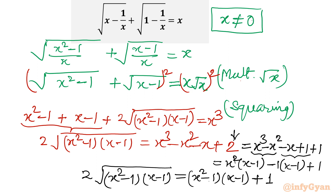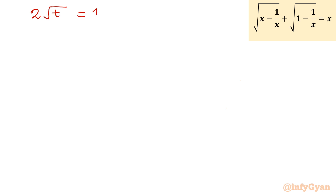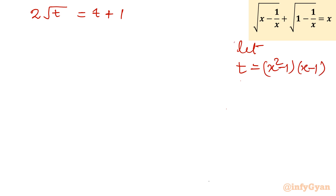Now you can easily see that the same expression appears on both sides. So I am going to give the substitution t = (x² - 1)(x - 1). The equation will then convert into 2 times square root of t equals t plus 1. Remember at the end we have to put back this value of t.